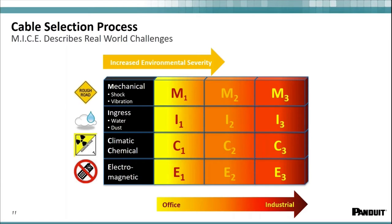Looking at the diagram, everything to the left is yellow — that's your carpeted office area — and then it moves to red concrete out on the plant floor. The point is you certainly don't want to use an IP20 patch cord, an RJ45 patch cord suitable for your office environment, in an I3 area — something on the plant floor that might get wet. Pretty common sense stuff.